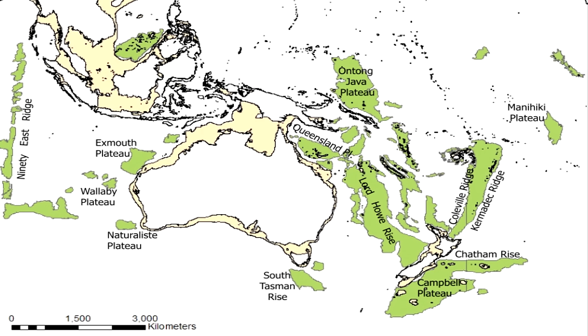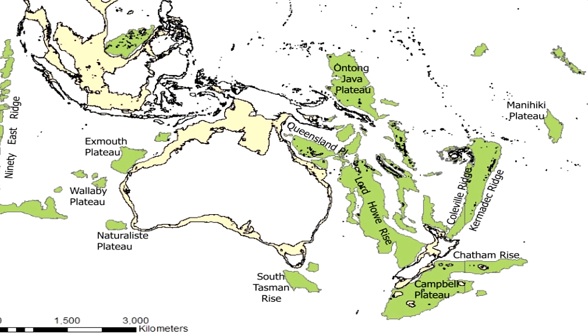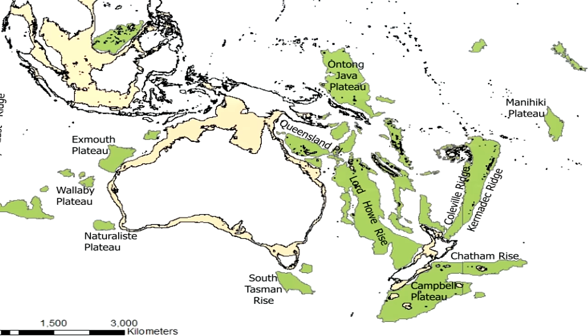One of the most intriguing features of the Tasman Sea is the Lord Howell Rise, a piece of Zealandia that was left behind during the rifting event. This submerged piece of continental crust is a testament to the dynamic nature of our planet.